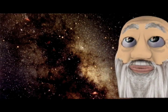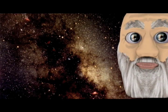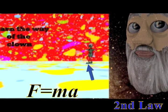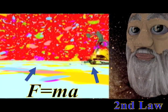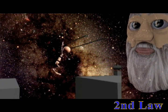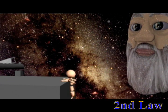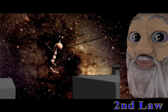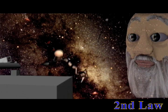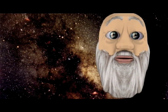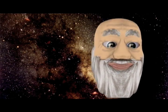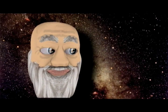Newton's second law. The relationship between an object's mass M, its acceleration A, and the applied force F, is F equals MA. Acceleration and force are vectors, as indicated by the symbols being displayed in a slant bold font, dot and net. In this law, the direction of the force vector is the same as the direction of the acceleration vector. That was Newton's second law.